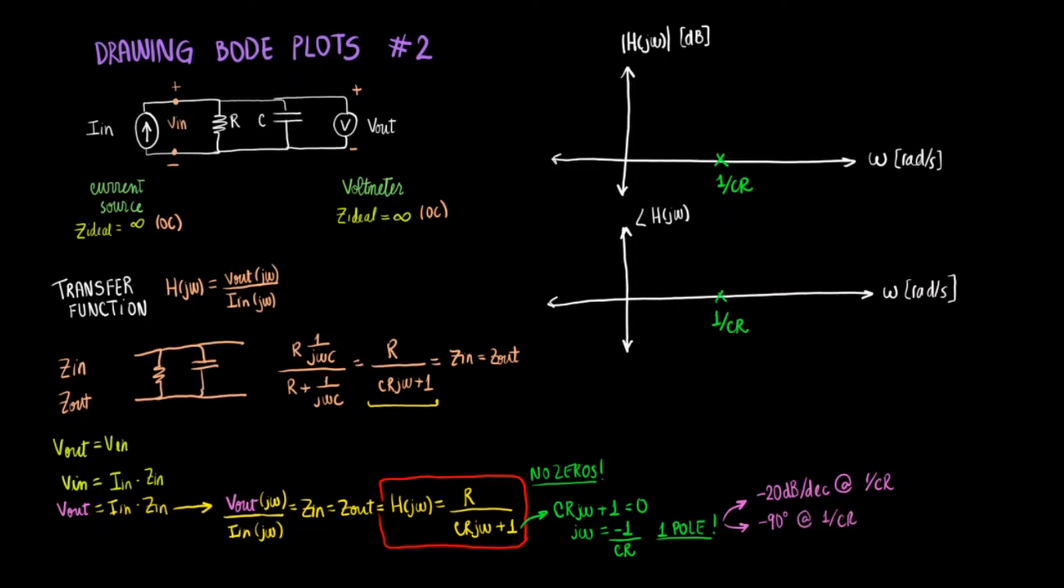So we can go ahead and start drawing your plots. We will have in the magnitude frequency plot us starting at a zero slope. And then once we hit the cutoff frequency, we will have that drop in the slope.